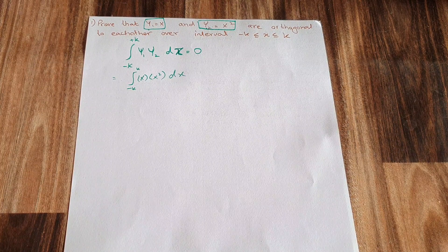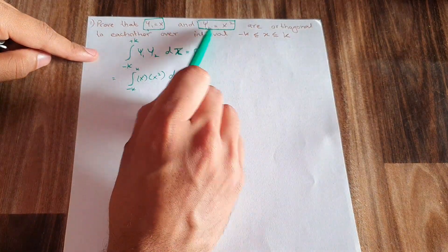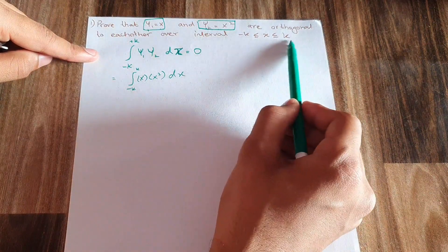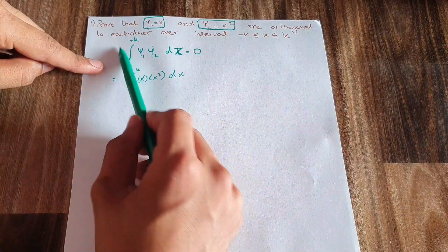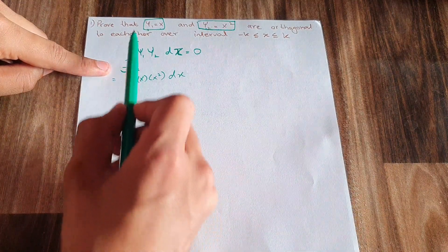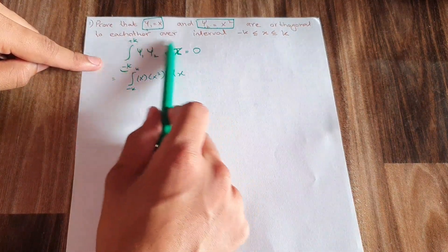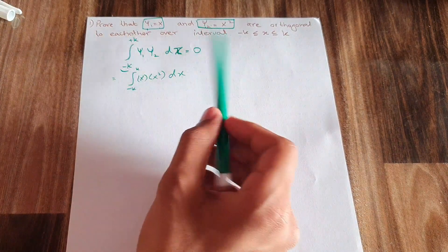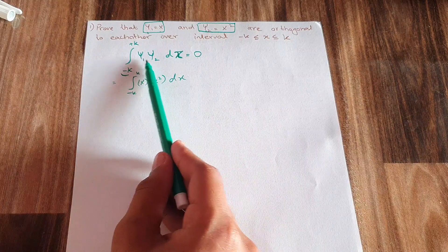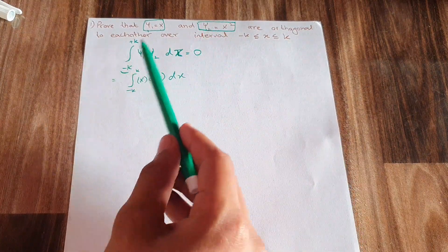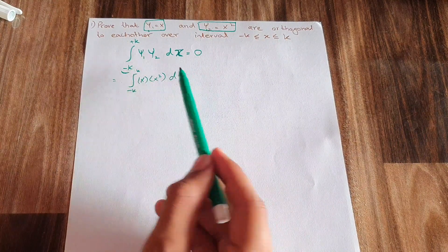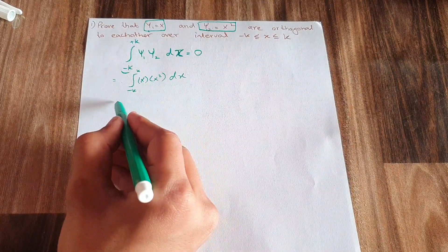Now we move to an example. We are given two wave functions: ψ₁ = x and ψ₂ = x². We have to prove that ψ₁ and ψ₂ are orthogonal to each other over the range from −k to +k. We write the condition: the integral from −k to +k of ψ₁ · ψ₂ dx must equal zero.